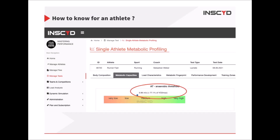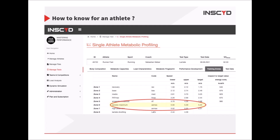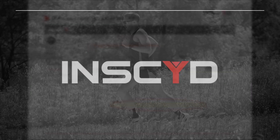Anaerobic threshold is not VO2max. So if you're aiming for VO2max, why prescribe training intensity based on anaerobic threshold? A better way to look at it is to build training zones which are dedicated to a specific physiological system.